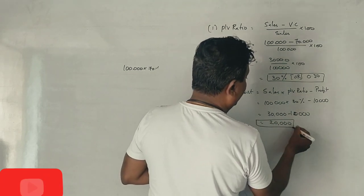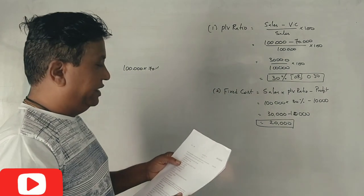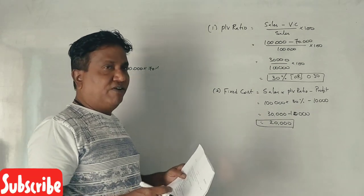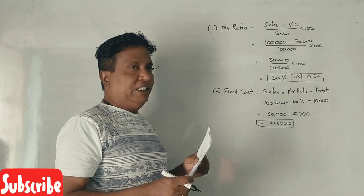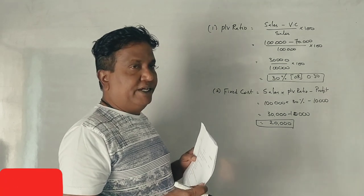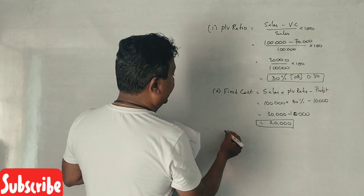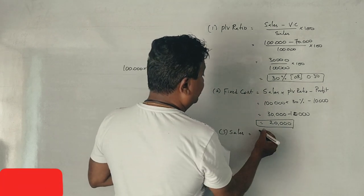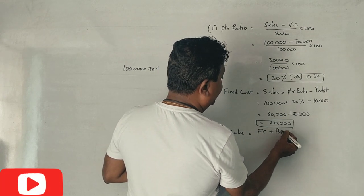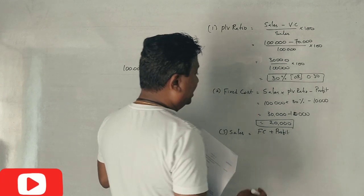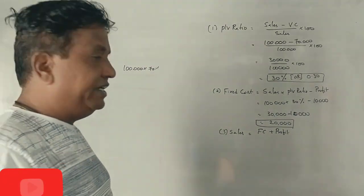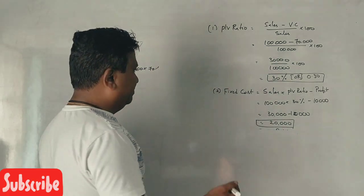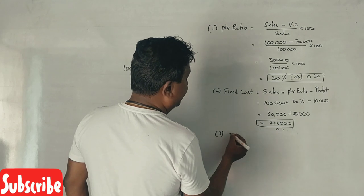Next question: what is the sales volume required to earn a profit of ₹40,000? The formula is: sales required equals fixed cost plus desired profit, divided by PV ratio. Fixed cost is ₹20,000.